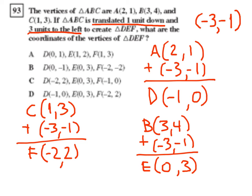So, let's see which ones match. That one is not it, that one is not it, that one is not it. Okay, here we go, we have D as negative 1, 0, E as 0, 3, and F as negative 2, 2. There's our answer, answer D.